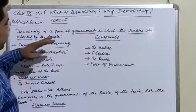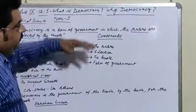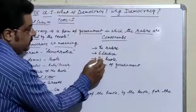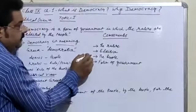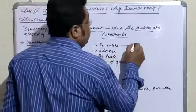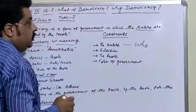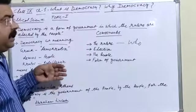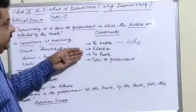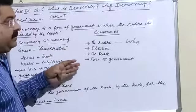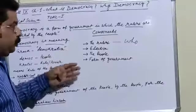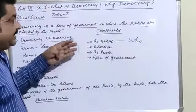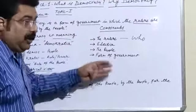Coming back to the previous definition, there are some components of democracy: the rulers, election, the people, and form of government. The rulers component means who rules — whether those elected by the people, dictators, or monarchs. The election component means people have the right and opportunity to choose their representative or government, and whether they truly have that choice.